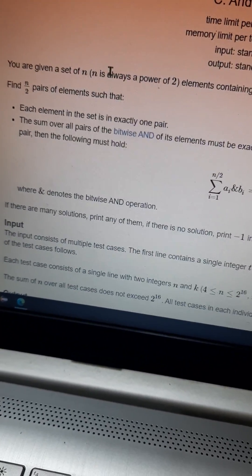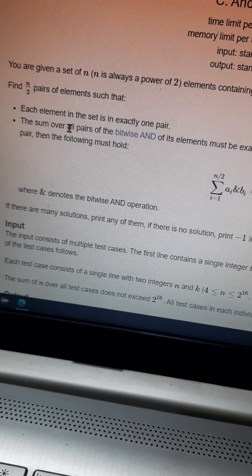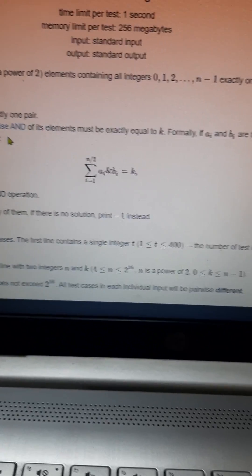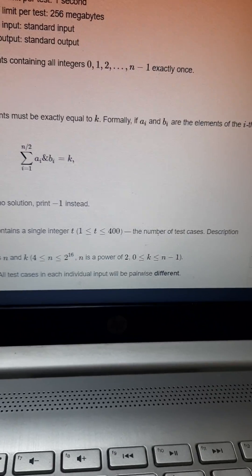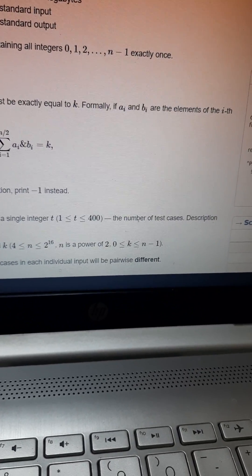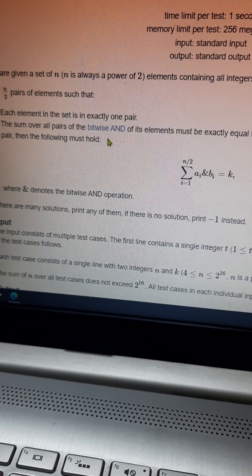The sum over all pairs of the bitwise AND of its elements must be exactly equal to k. Formally, if ai and bi are the elements of the i-th pair, then the following must hold.